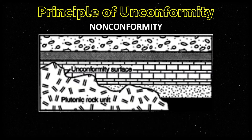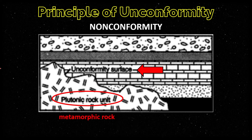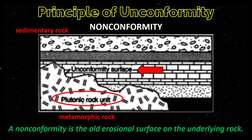Now let's talk about nonconformity. A nonconformity is the contact that separates younger sedimentary rock units from an igneous intrusive rock or metamorphic rock. The layer below the erosional surface is either a metamorphic rock or an igneous rock, and the layer above the erosional surface is a sedimentary rock. A nonconformity suggests that a period of long-term uplift, weathering, and erosion occurred to expose the older, deeper rock at the surface before it was buried by the younger rocks above it.